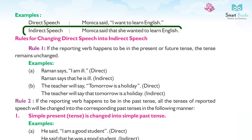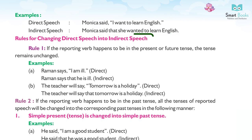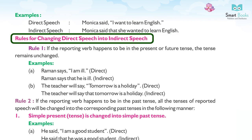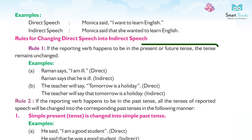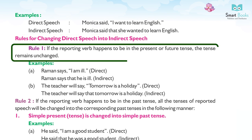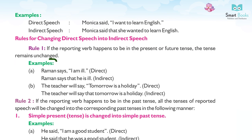Example: Direct speech — Monica said, 'I want to learn English.' Indirect speech — Monica said that she wanted to learn English. Rule 1: If the reporting verb is in the present or future tense, the tense remains unchanged.